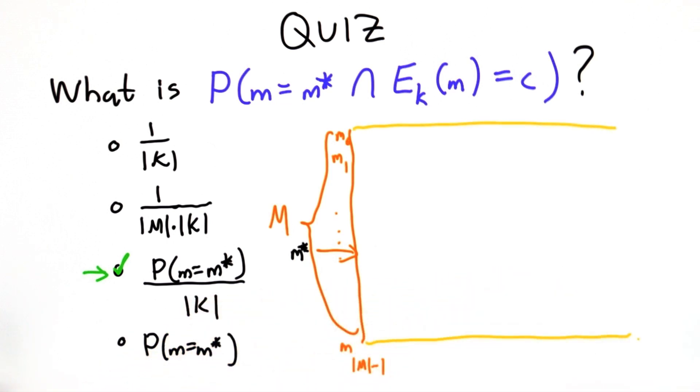The other dimension in our probability space is the choice of the key, and there are k possible keys. So what we want to know is what is the intersection of these two events. So the M star event is this line in our probability space.